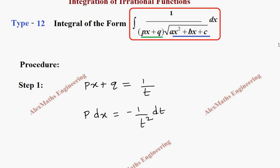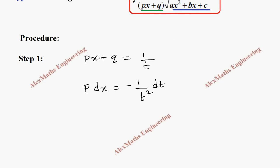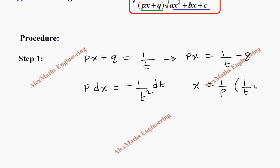We also need x. Rearranging, we get px = 1/t − q, and therefore x = (1/p)(1/t − q). So everything we substitute in the question to express the integral in terms of t.